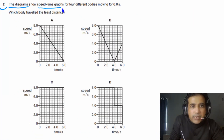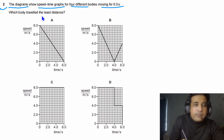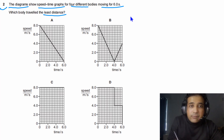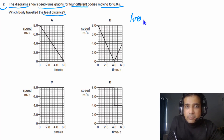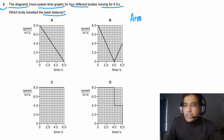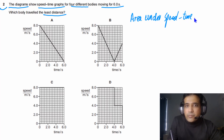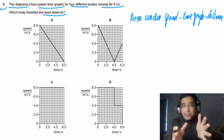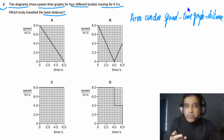For Question 2, diagrams show speed-time graphs for four different bodies moving for 6.0 seconds. We need to find which body travels the least distance. The area under a speed-time graph represents distance, so we need to compare the areas of each graph.